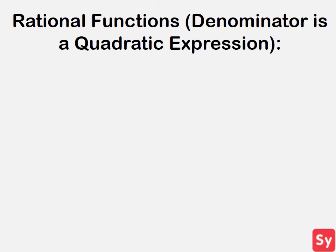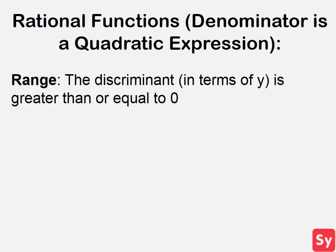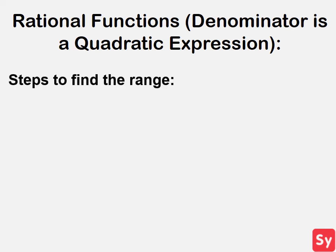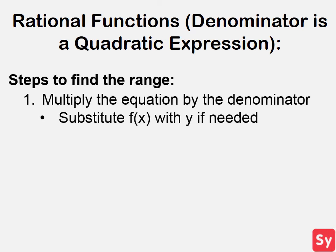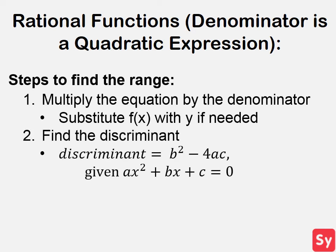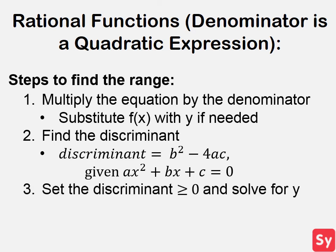Next we will talk about the range of rational functions when the denominator is a quadratic expression, which is a little trickier to find. The range is when the discriminant is greater than or equal to 0. In order to find the range, first multiply the equation by the denominator, substituting f with y if needed. Next find the discriminant. The discriminant is b squared minus 4ac. Next, set the discriminant greater than or equal to 0 and solve for y. Sometimes making a table to see when the discriminant is positive and 0 is helpful. Finally, write the range.